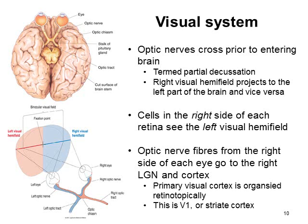If you look at the diagram at the bottom, the left visual hemifield is shown in pink and the right visual hemifield in blue, with the nerves coloured to identify which part sees which hemifield. The fixation point is shown in the middle. The optic nerve fibres from the right side of each eye go to the right LGN — the thalamus — and the cortex. The primary visual cortex is organised retinotopically, so its organisation is identical to that of the retina. This is the V1 area, or the striate cortex.